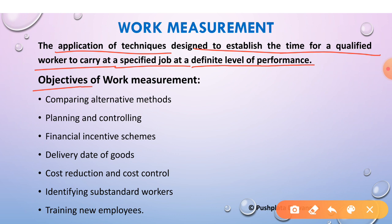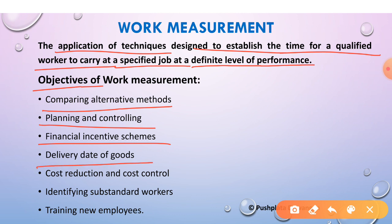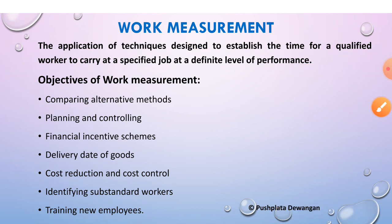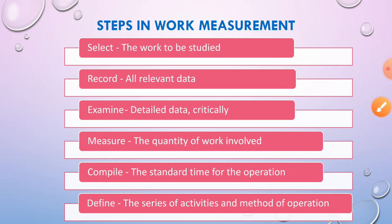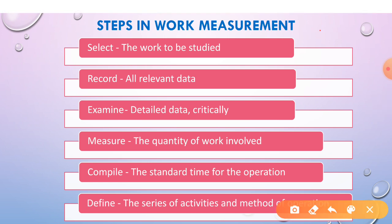The objectives of work measurement include: comparing alternative methods of doing things; planning and controlling the time taken by employees; financial incentive schemes; knowing delivery dates for goods in advance; cost reduction and cost control; identifying substandard workers and resolving their problems; and training new employees in the organization.